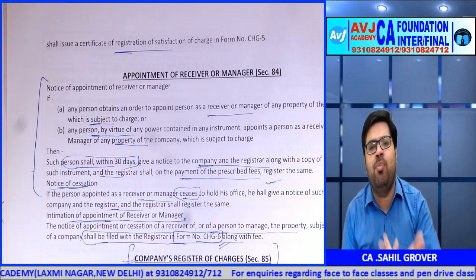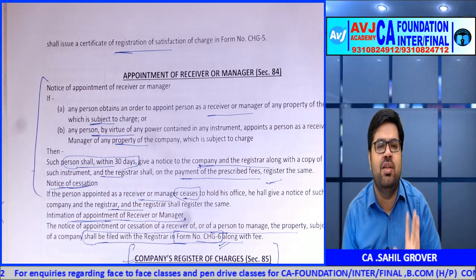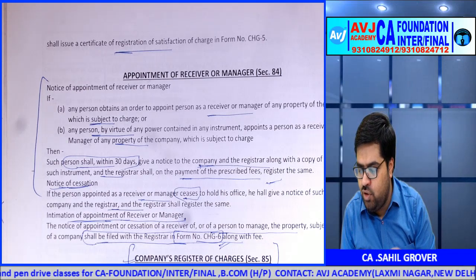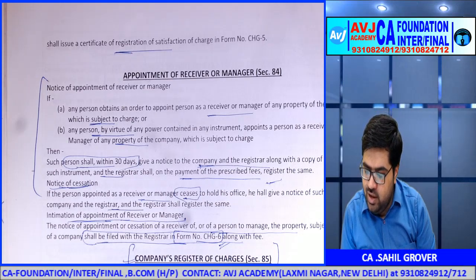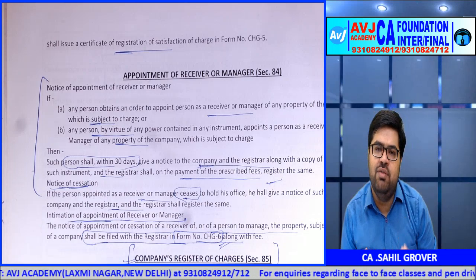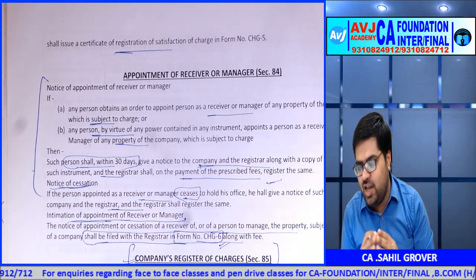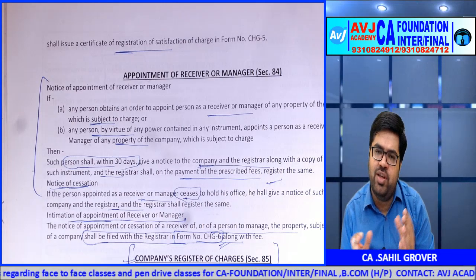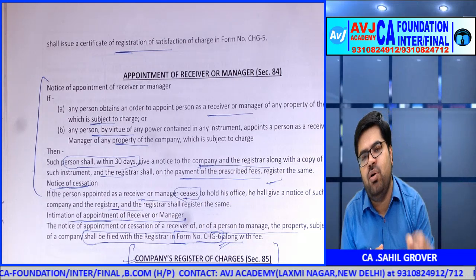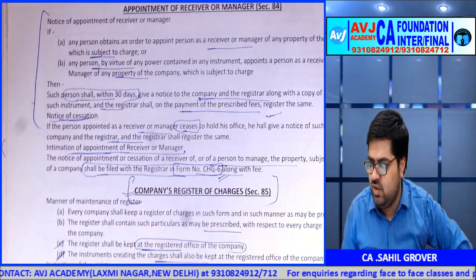Section 84: appointment of receiver or manager. If a creditor appoints a liquidator, receiver, or manager over a company's property, that person must give a notice to the company and to the Registrar within 30 days of appointment. When that receiver ceases to operate, he also informs the Registrar within 30 days. This notice must be given in form CHG6. The receiver cannot directly proceed against the company's property without first giving this notice.